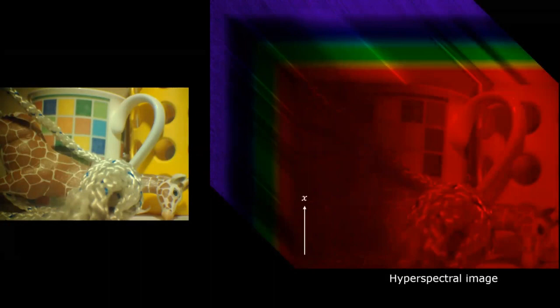Hyperspectral images go beyond. They capture images at fine divisions in the wavelength, forming a three-dimensional cube of X, Y, and wavelength dimensions.